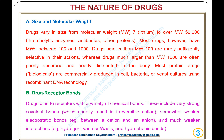B. Drug-receptor bonds. Drugs bind to receptors with a variety of chemical bonds. These include very strong covalent bonds, which usually result in irreversible action; somewhat weaker electrostatic bonds, for example between a cation and an anion; and much weaker interactions, for example hydrogen, van der Waals, and hydrophobic bonds.